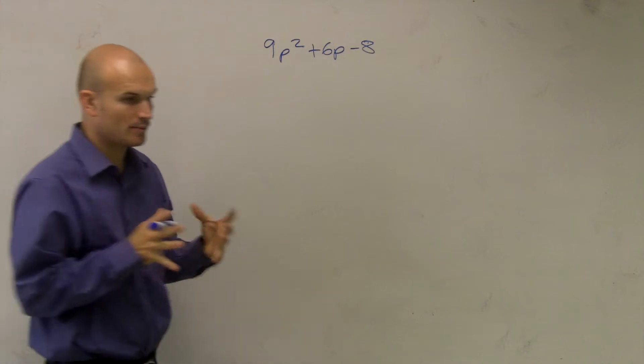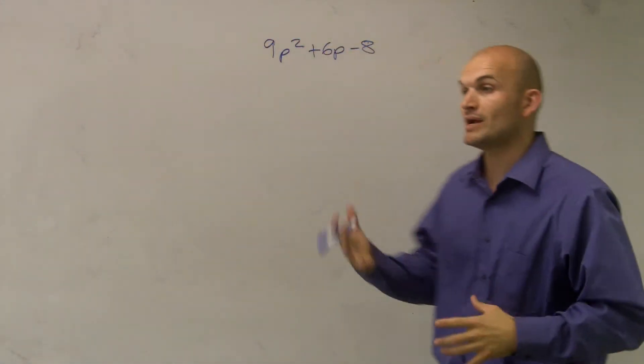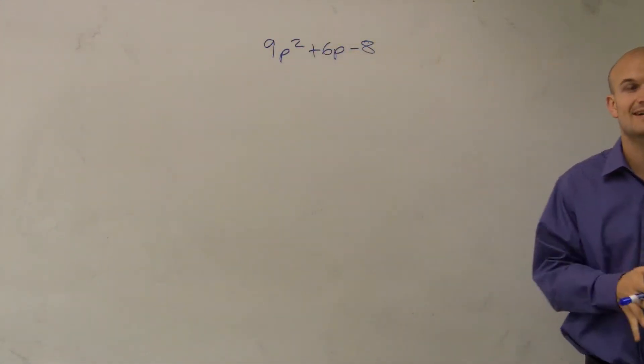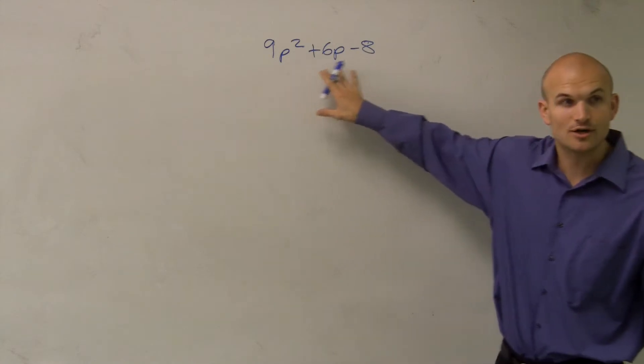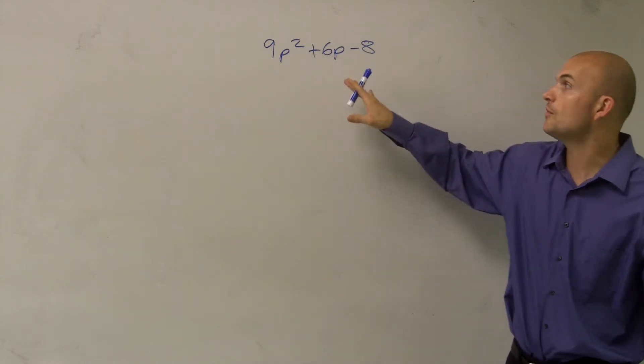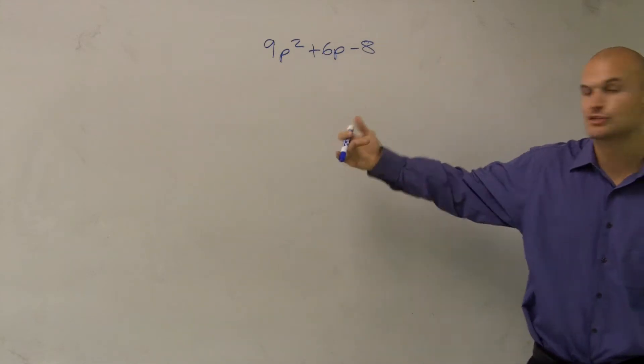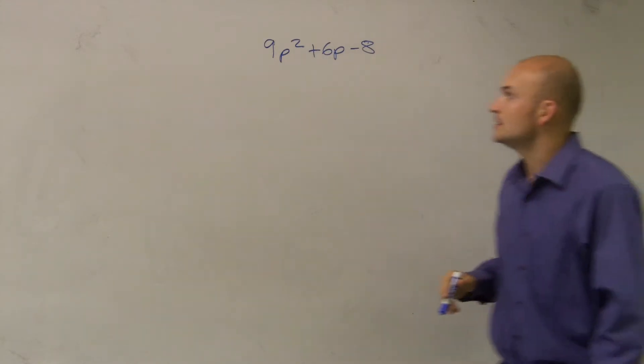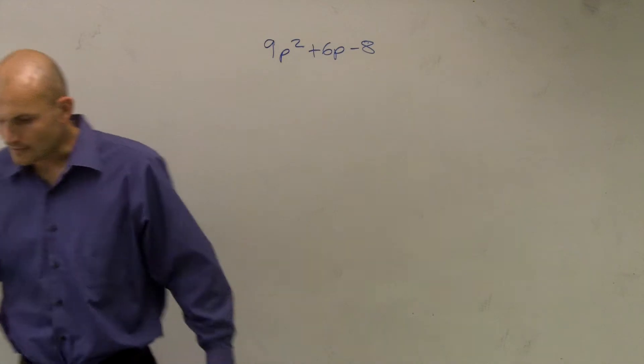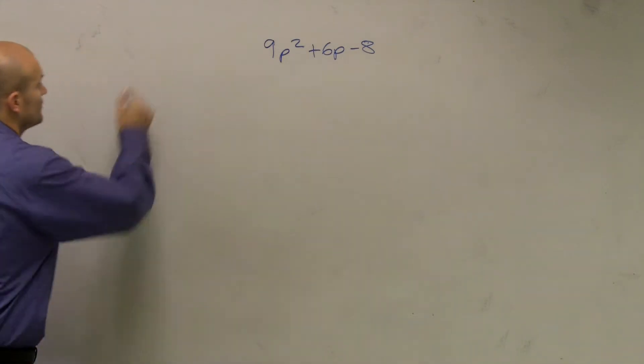The main important thing we need to do, remember when we're factoring, we're taking our expression and we're writing it as the product of two factors. Now since we have this trinomial here and it's in a quadratic form, we can use a couple techniques that I'm going to show you to help you factor this. So one thing for us to remember, when we're factoring,